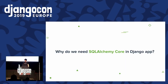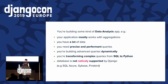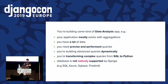I want to start with motivation. Why should we mix Django and SQLAlchemy Core, what benefits we can get, and in which cases it could be useful? The main use case is a data analysis application — where your application works mostly with aggregations, you don't work with single rows, you don't have a REST API, and you're only interested in aggregations and calculations. You'll likely have a lot of data, so you need your queries to be really performant and precise.